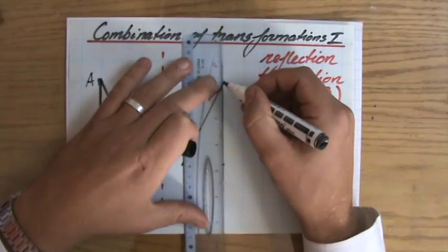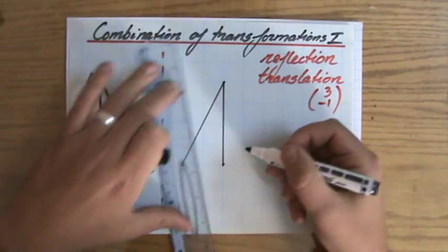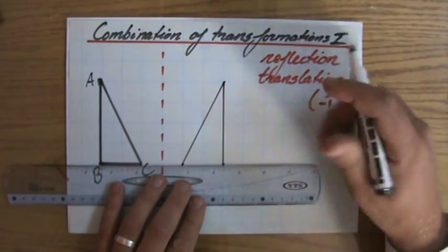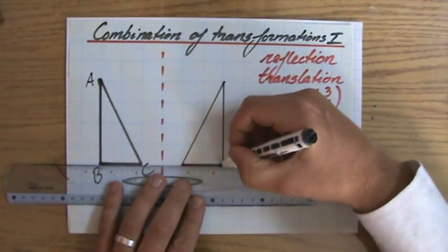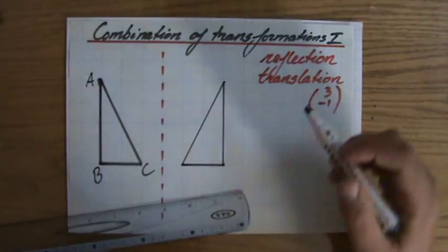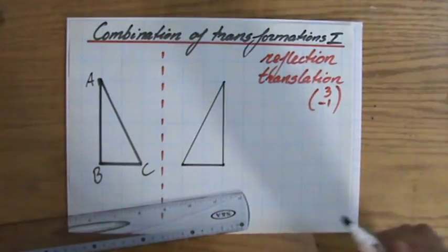There we go. So that is my first transformation. But I'm not finished yet. Then I have to translate it under the vector 3 minus 1.